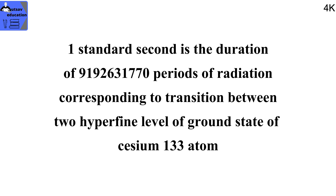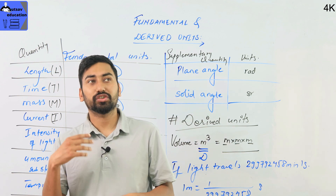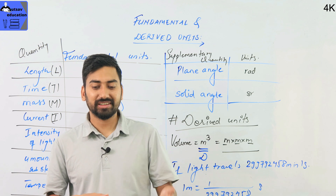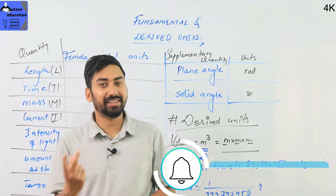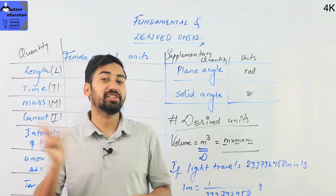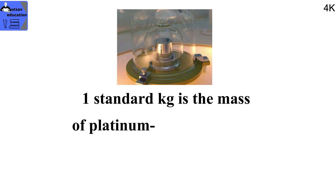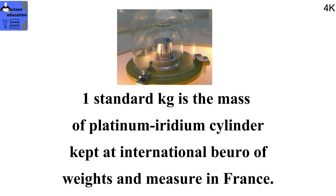The cesium atom's oscillation is used to define the second. You can also explain that 1 second is 1 by 86,400 of a mean solar day. For the kilogram: the kilogram is the mass equal to the mass of a standard platinum-iridium alloy cylinder — 90 percent platinum and 10 percent iridium — kept at the International Bureau of Weights and Measures in Paris, France.